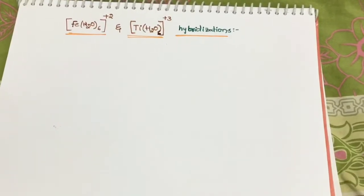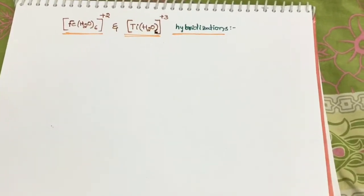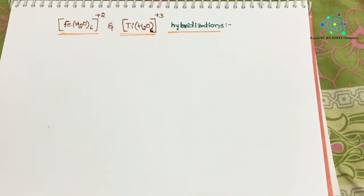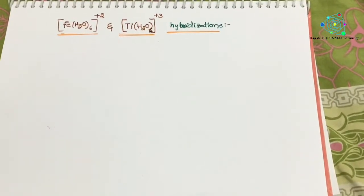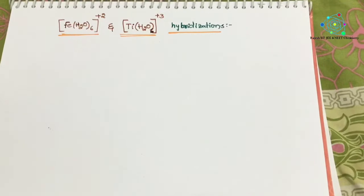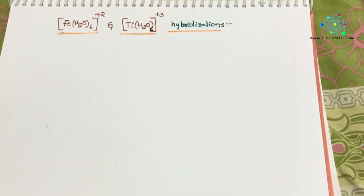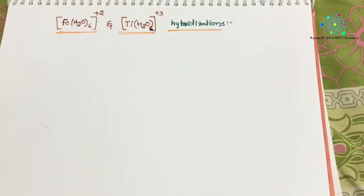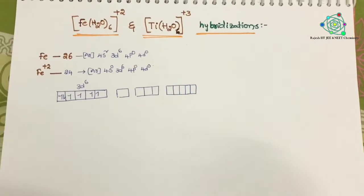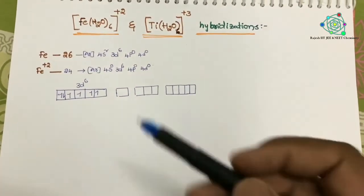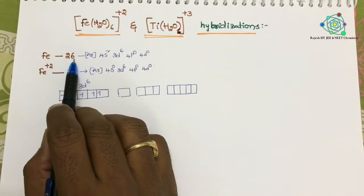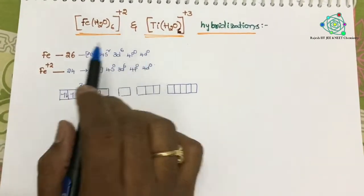Hello students, welcome to today's class. In today's class, we are going to focus on the given two complexes and their hybridizations according to the valence bond theory. According to the valence bond theory, first the central metal atom electronic configuration is examined.